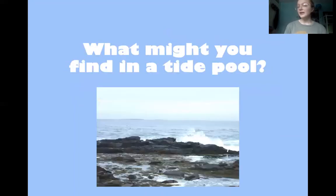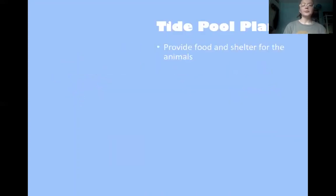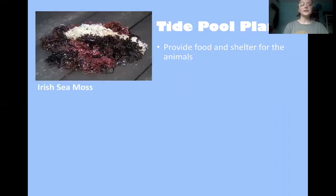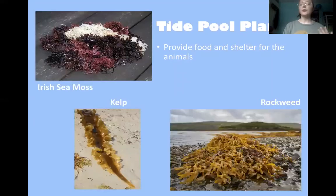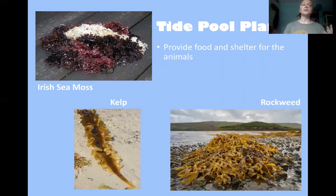So what might you find in a tide pool? First, tide pool plants — they provide food and shelter for the animals living in the tide pools. These plants include Irish sea moss, kelp, and rockweed. These plants are often completely covering the rocks of the tide pools, which makes the rocks very slippery, which is why you need to be very careful when you're tide pooling.